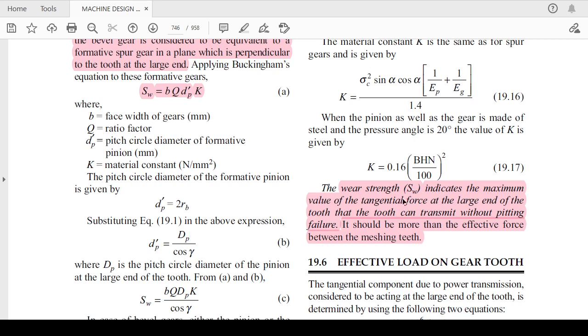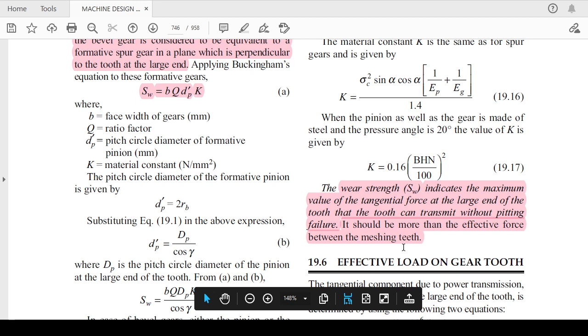This is all about the wear strength. The wear strength indicates the maximum value of the tangential force at the large end of the tooth that the tooth can transmit without pitting or wearing failure, and it should always be more than the effective force between the meshing teeth. That's why factor of safety will come in the picture.